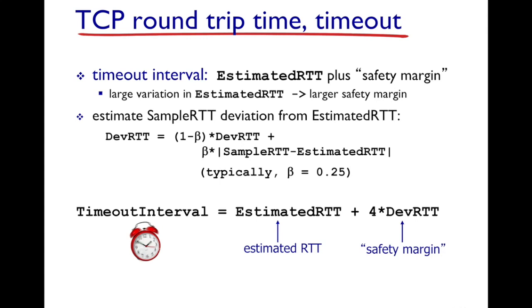The DevRTT formula is also an Exponential Weighted Moving Average: DevRTT = (1 − β)·DevRTT + β·|SampleRTT − EstimatedRTT|. You weight your current estimate of deviation by (1 − β), and the absolute difference between the current sample and estimated RTT by β. The typical value of β used in real-world measurements is 0.25.